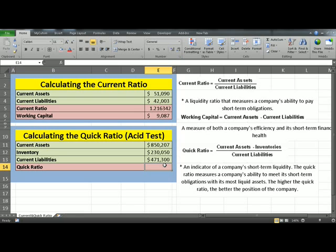To do this, you click in E14, equals, open the parentheses, Current Assets, minus Inventory, close the parentheses, divided by Current Liabilities, and hit Enter.